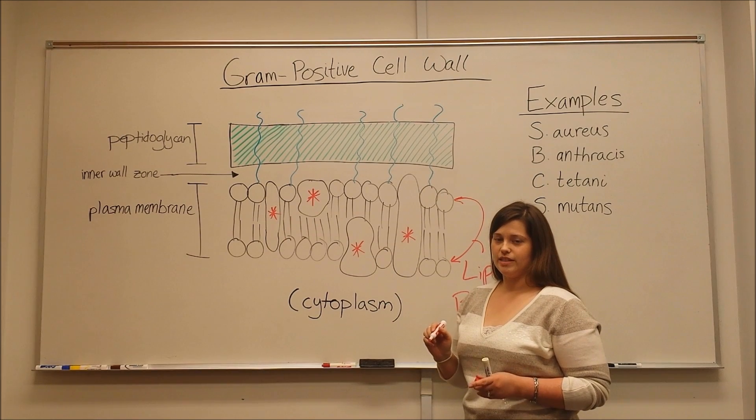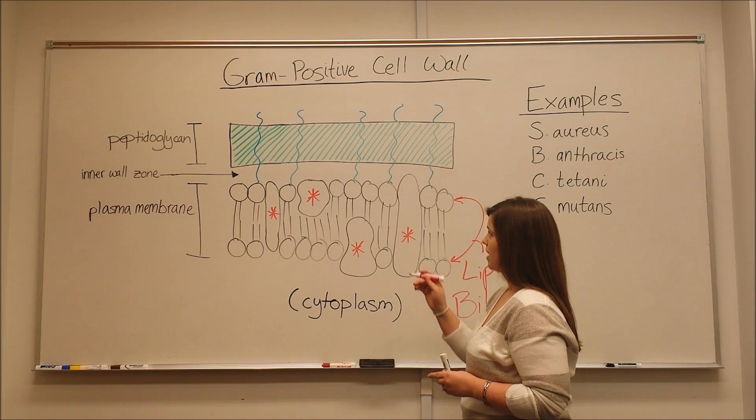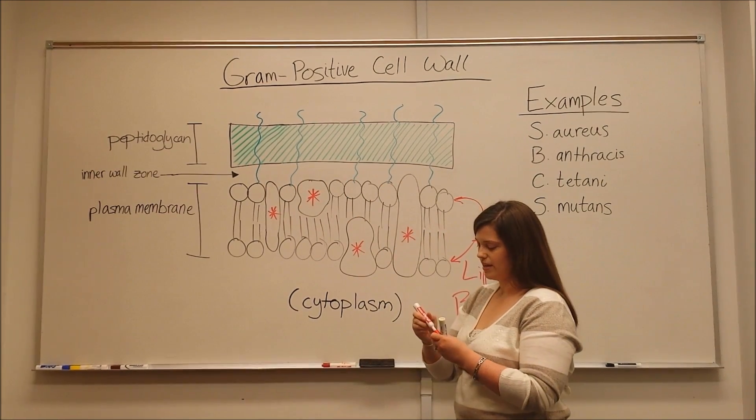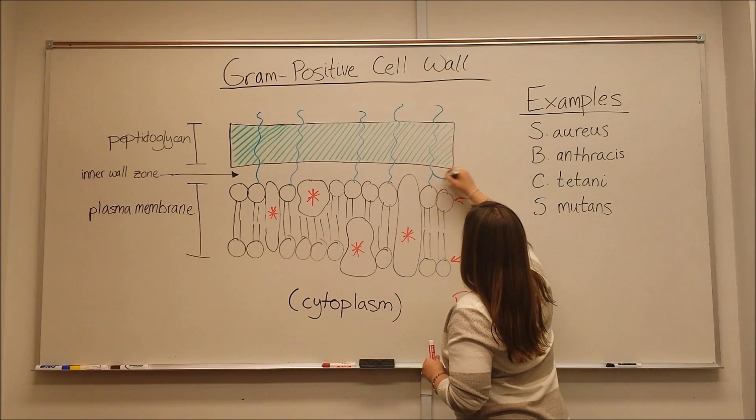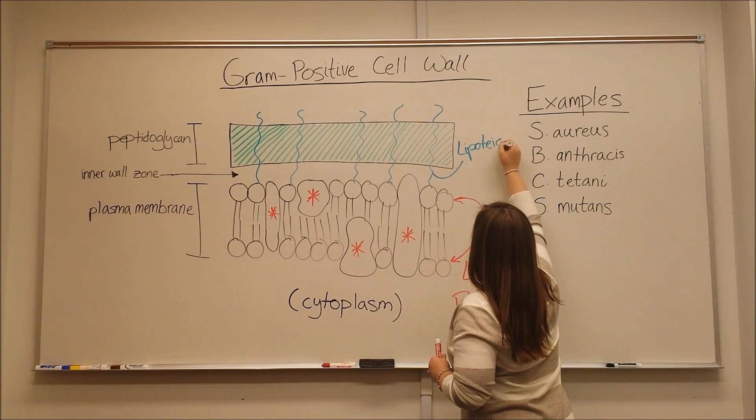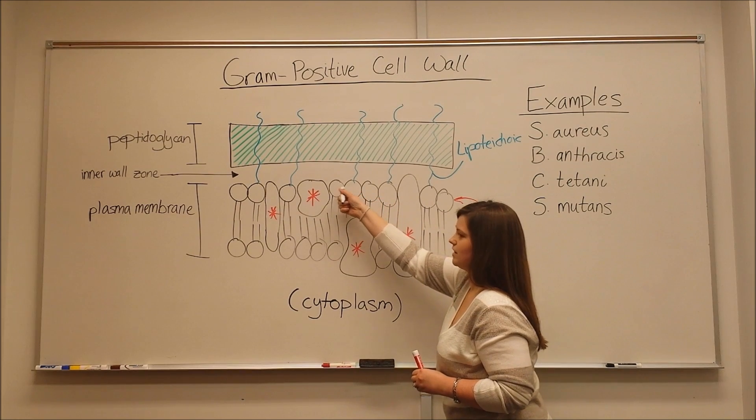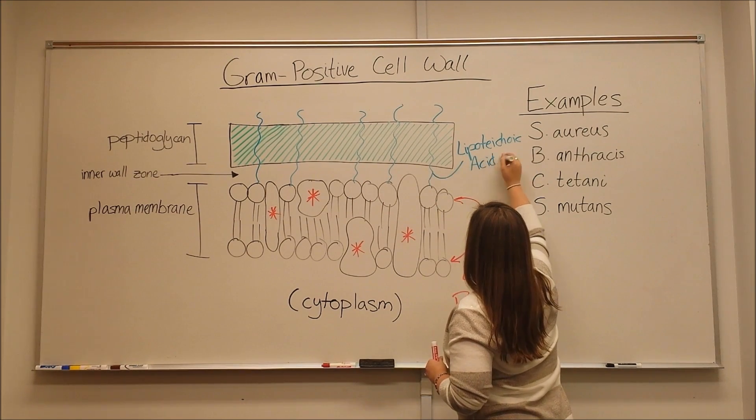Finally, there is one other distinguishing characteristic that you see in gram positive cell walls. And this is what I have indicated here by these blue lines. These are called lipoteichoic acids. And these anchor through the peptidoglycan layer onto lipids in this lipid bilayer. So these are lipoteichoic acids.